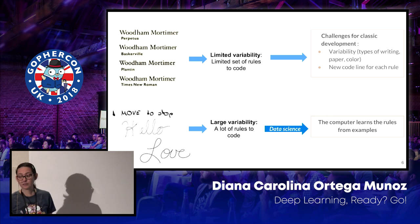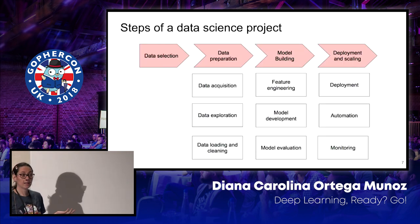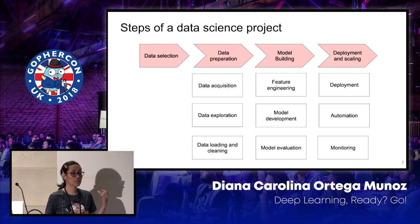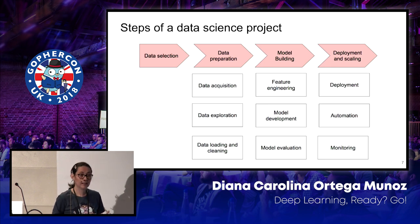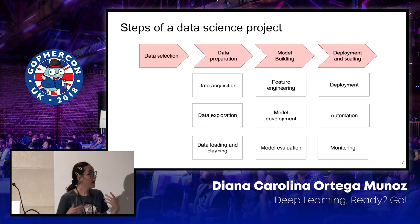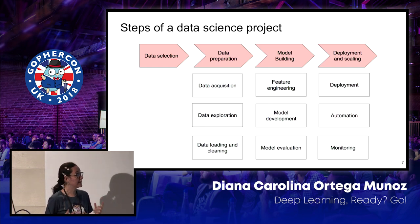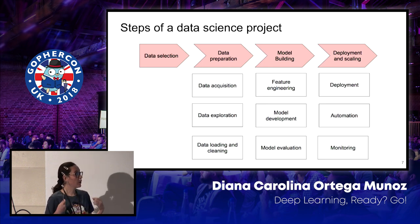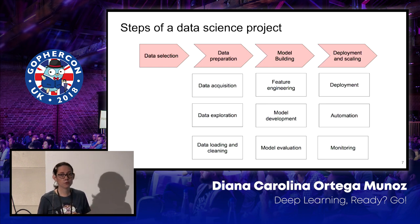As it is machine learning, it's data science. To manage a data science project, we have a set of steps. First of all, we have to select the data. We have to prepare the data, clean it — for example, if we have images, we have to drop the noise, the salt-and-pepper noise and similar things. When we have a good dataset, we can start to build a model. And when we have a model, we build something that we can deploy and use in a production environment.